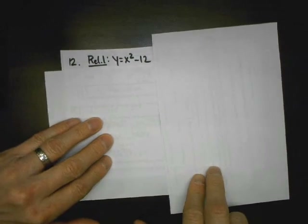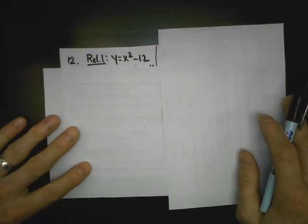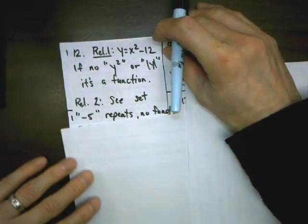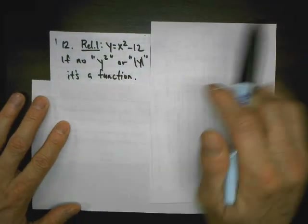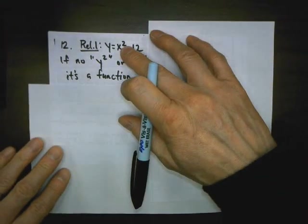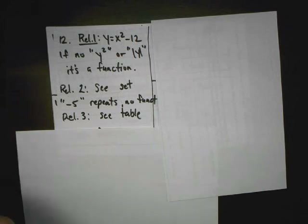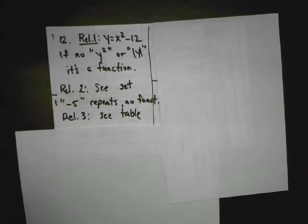Problem 12: which relations are functions? Relation one is an equation — most equations you see in eighth grade are functions, but if you ever see y squared or absolute value of y, those fail the vertical line test and are not functions. Relation two is a set of points — I look at those points and check if any of my x values repeat.